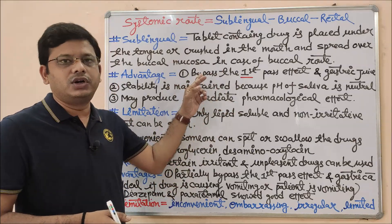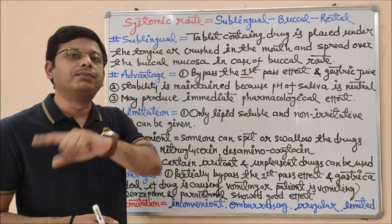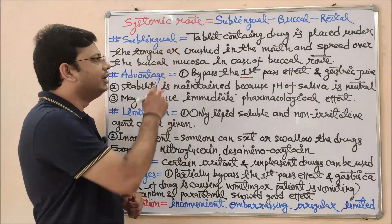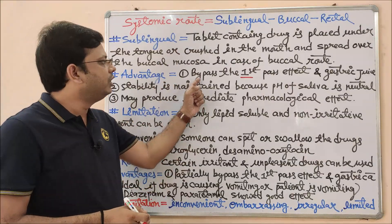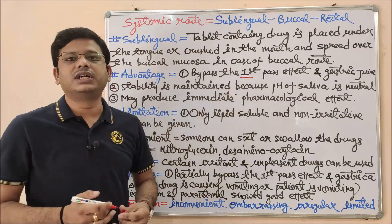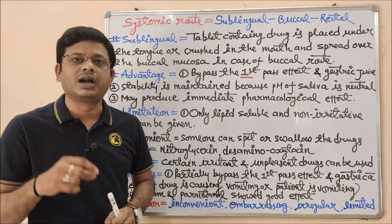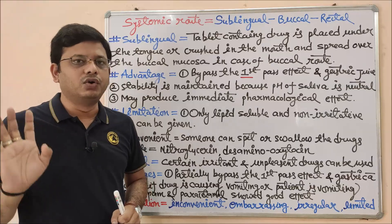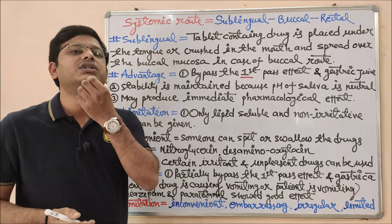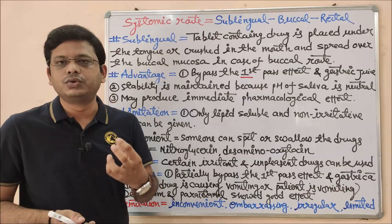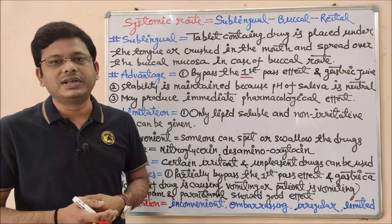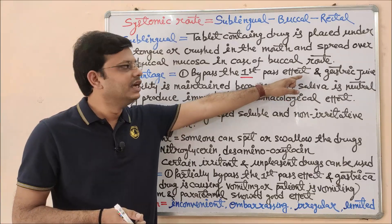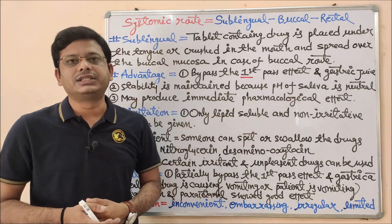To overcome that particular limitation of oral route, we should use the sublingual route of drug administration. In sublingual, there is a bypass because the drug is not going to the intestine, not going to the stomach, and not going directly to the liver either. Instead, it goes directly through the capillaries to the blood vessels — that is an important difference.